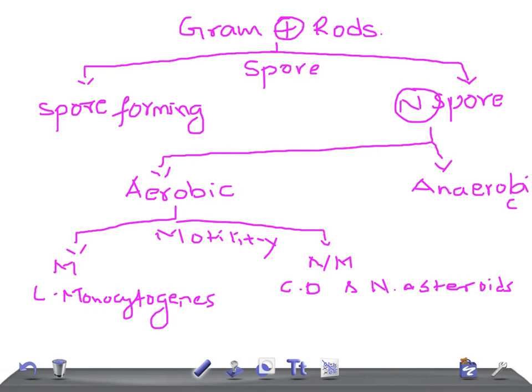In the anaerobes of non-spore forming gram-positive bacteria, we have Actinomyces israelii. The most important feature is sulfur granules in exudates from the sinus tract — a very important feature of Actinomyces israelii.